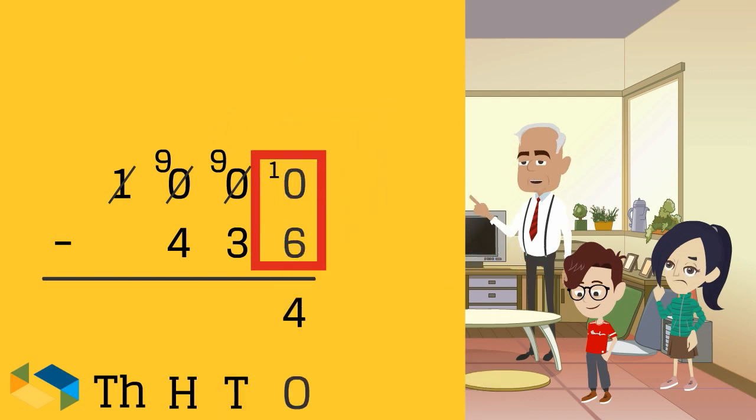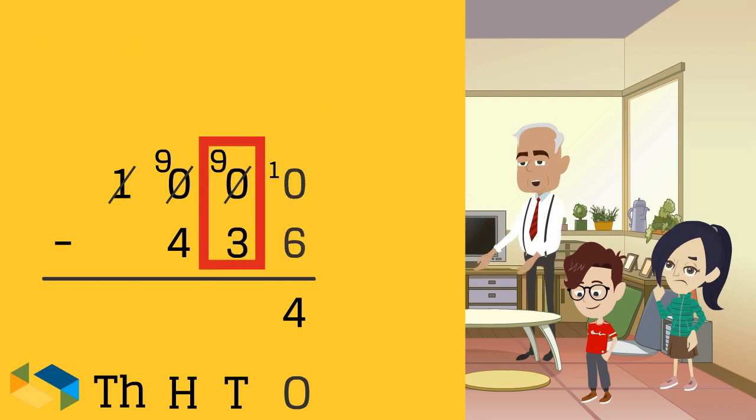We now solve the ones place. We get 10 minus 6 to be 4. We have 9 minus 3 at the tens place. So the answer here is 6.